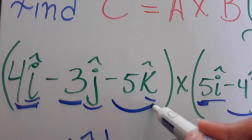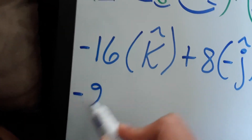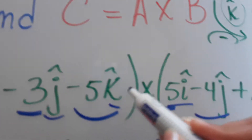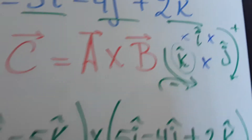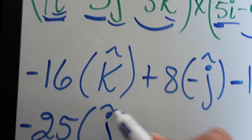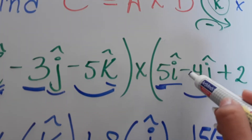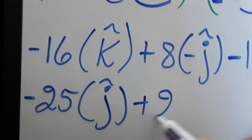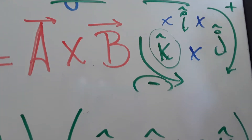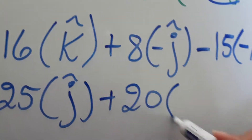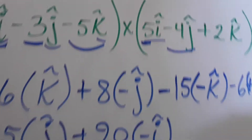Now we're going to go to the last term. We're going to have negative 5 times 5, that's negative 25. And k cross i is going clockwise, so it's going to be a positive j. Now negative 5 times negative 4, that's plus 20. And k cross j is going the other way — it's counterclockwise, so it's a negative i. And k cross k is 0, and that's all we need.